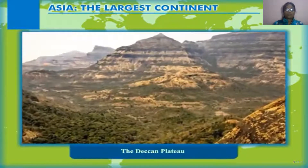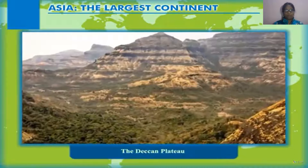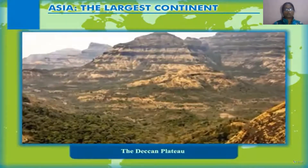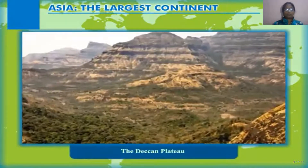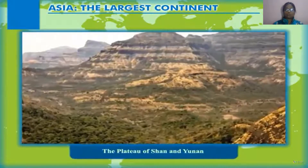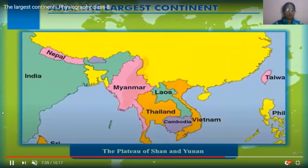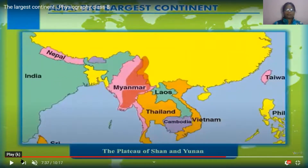The third one is the Tibetan plateau. The Tibetan plateau is located in the center portion of this continent. It is also called the roof of the world, and it is very vital to the water cycle of the earth. It contains a number of glaciers.